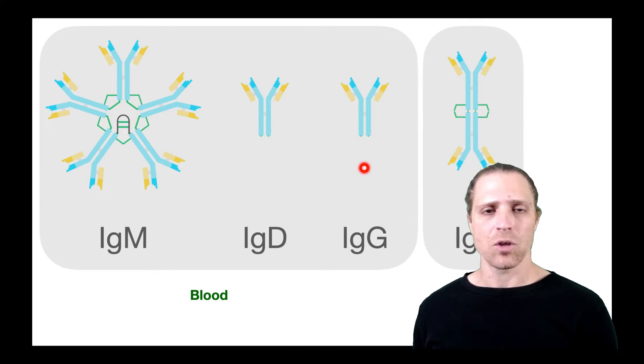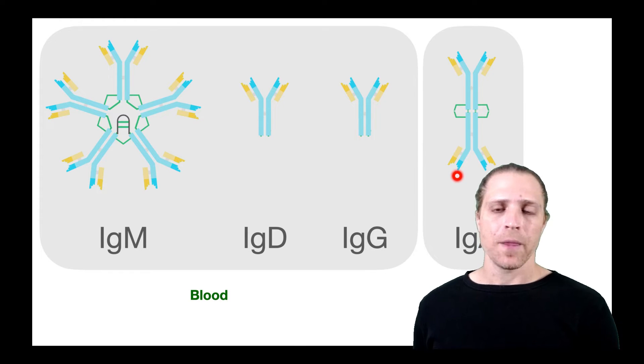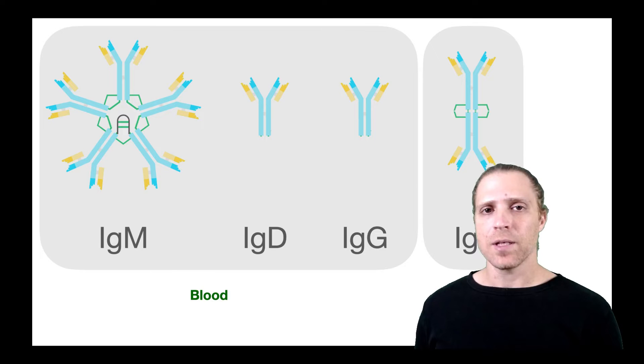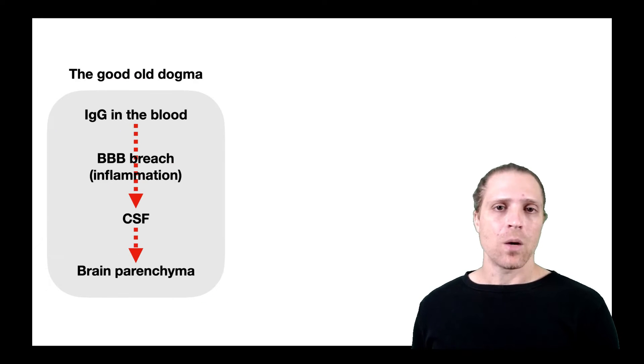Another antibody type called IgA is not secreted to the blood, but it's known to be secreted in mucosal areas, specifically the upper respiratory system as well as the gut.